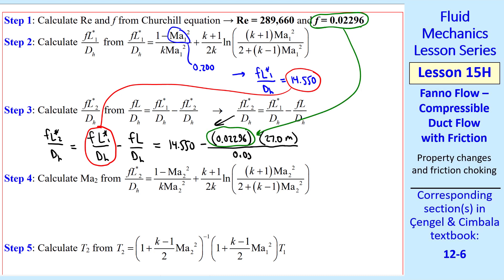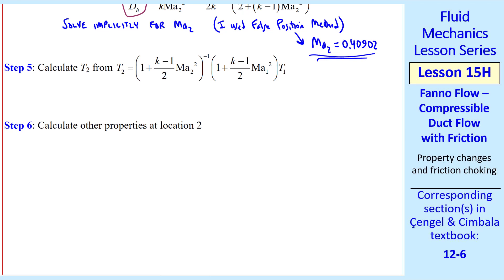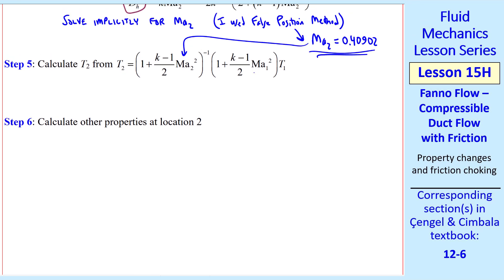Thus we get F L star 2 over DH is 2.1507. In step 4, we take this value, plug it into our workhorse equation at location 2, and we solve implicitly for MA2. This involves some iteration, and I use the false position method. I get 0.40902. Step 5 is to calculate T2. Now that we know Mach number 2, and we also know Mach number 1, T1 itself is also given as 450 K. We get T2 equal 438.91 K.